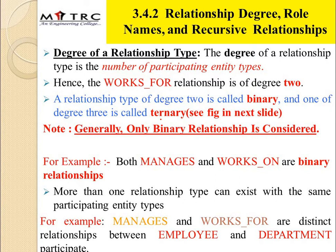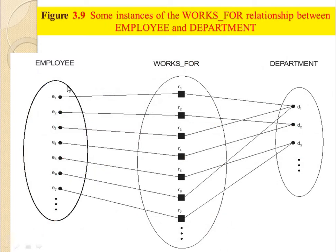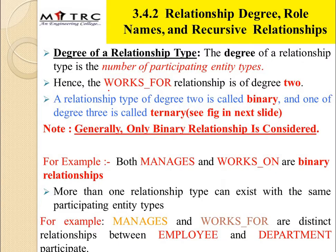The first is the degree of relationship type. The degree denotes the number of participating entity types. For example, if we take the 'Works For' relationship from the previous lecture, it is connected with two entities: employee and department. So we can say that 'Works For' is a relationship of degree 2.